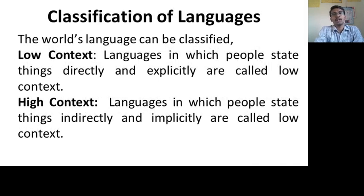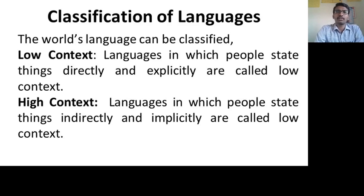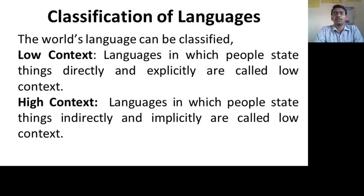Next is the classification of languages. Languages can be classified into low context and high context. In low context language, people state things directly and explicitly. Whatever is presented by the people should be clear for understanding — that means it is a low context language. You can read it directly and it is clear.